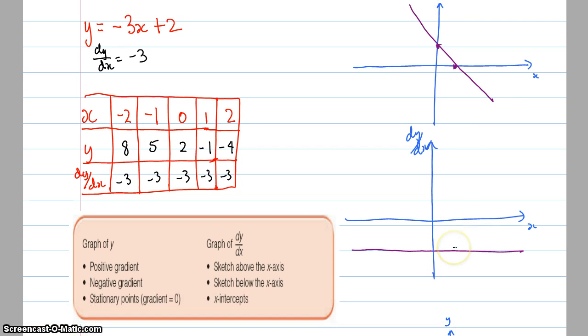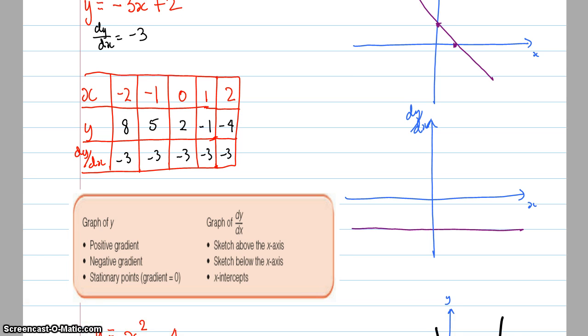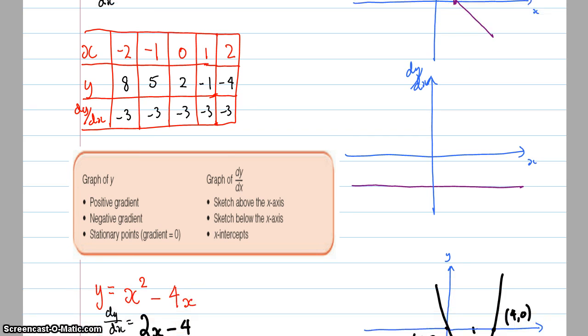And then finally, a stationary point or when the gradient is 0 on the original graph, that will become an x-intercept because that's when the gradient is 0 of the gradient graph. So hopefully that helps a little bit. Let's have a look at another example here.